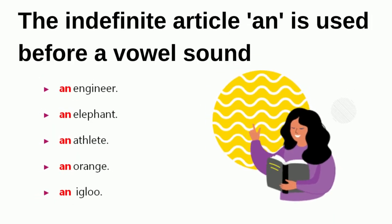Next, the indefinite article 'An' is used before a vowel sound. The vowel letters are A, E, I, O, U. Some nouns start with these letters but do not give a vowel sound — in that case we use 'A'. But when a word gives a vowel sound, we use 'An'. Like: an engineer, an elephant, an athlete, an orange, an igloo.